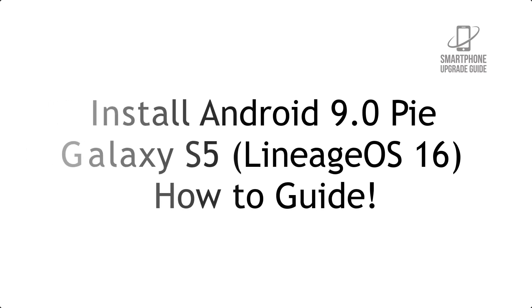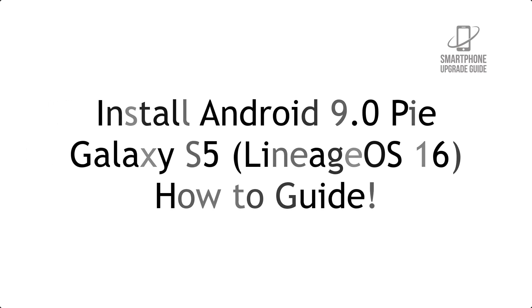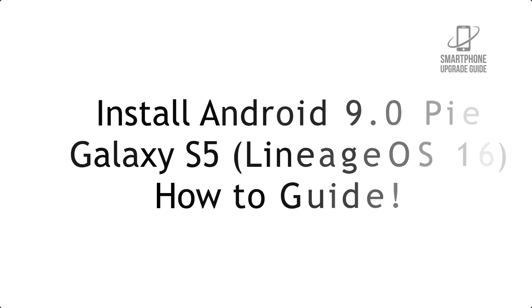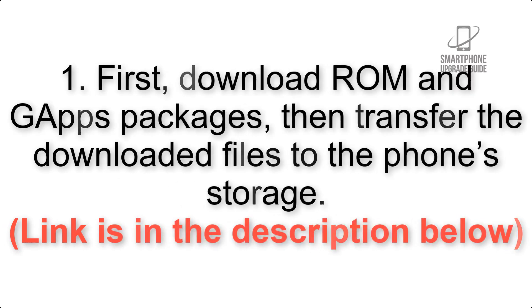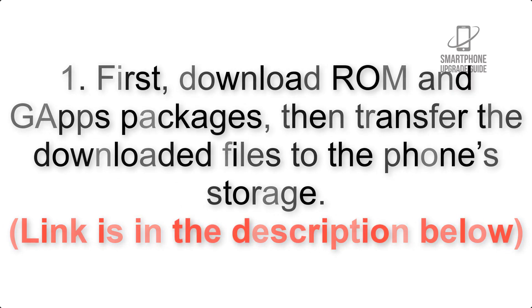Install Android 9.0 Pie on Galaxy S5 via LineageOS 16. Please check the description for important notes and all the download links. First, download the ROM and GApps packages, then transfer the downloaded files to the phone storage. The link is in the description below.